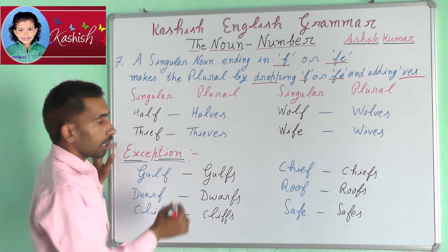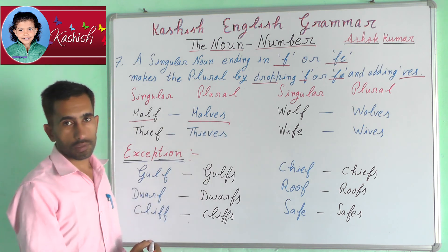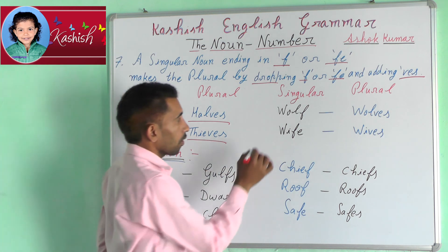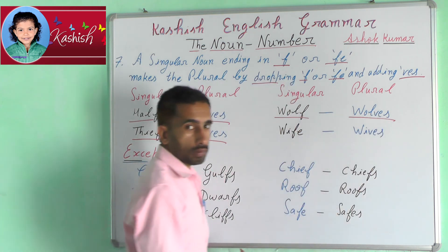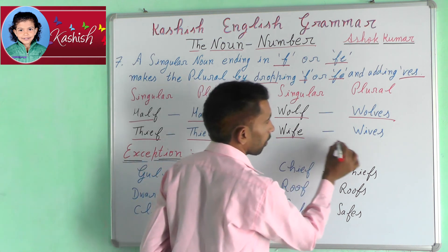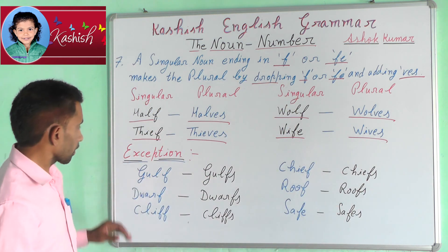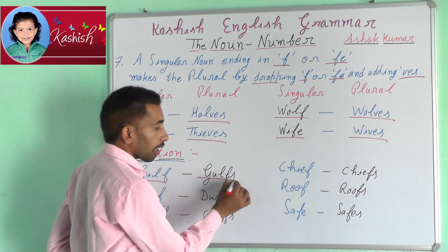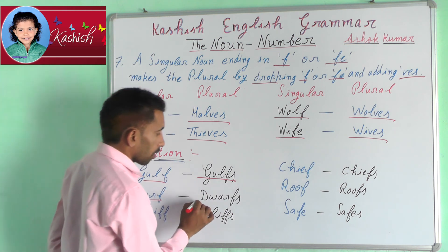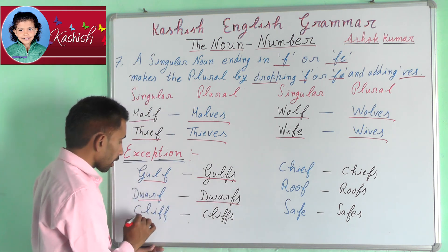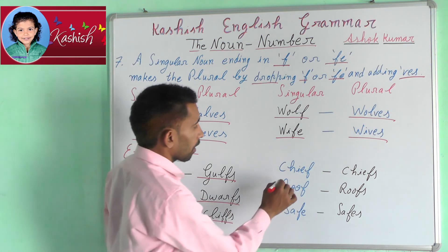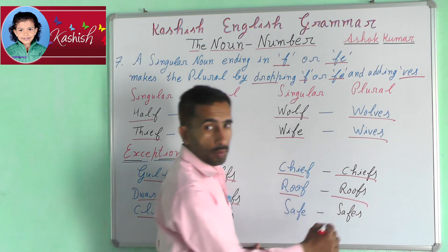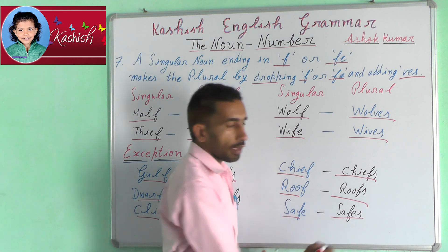For example: half → halves, thief → thieves, wolf → wolves, wife → wives. Exception: gulf → gulfs, dwarf → dwarfs, cliff → cliffs, chief → chiefs, roof → roofs, safe → safes.